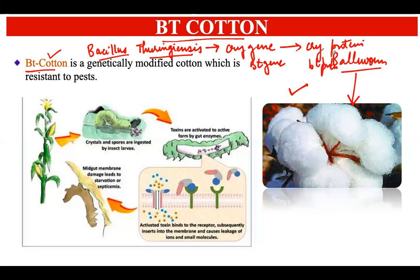The Bt protein, or cry protein, has the capability of killing the bollworm. When this cry protein enters into the gut of the bollworm, it gets activated due to the alkaline pH of the bollworm's gut, and due to this activation it leads to the killing of the insect.